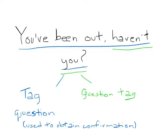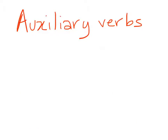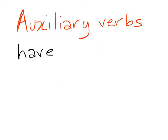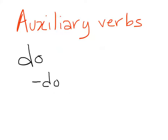Firstly, not all verbs are repeated to form tag questions, because this contraction is only possible with auxiliary verbs like be, have, do, and will.